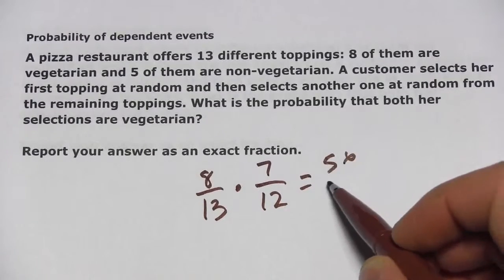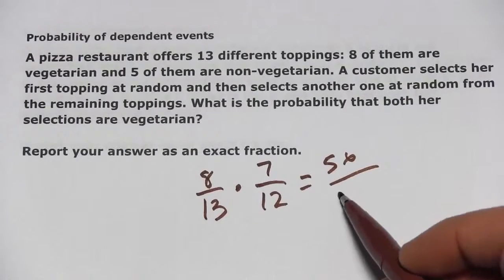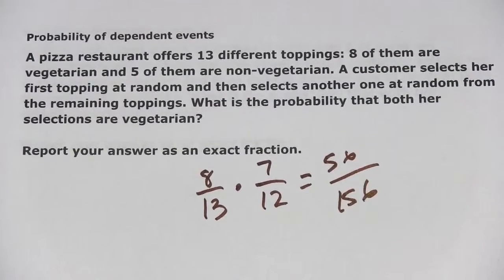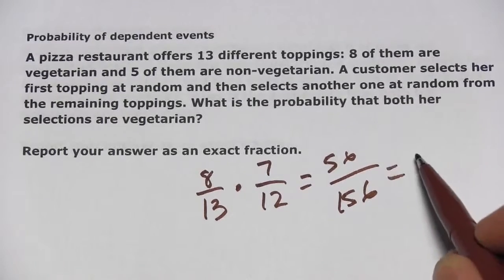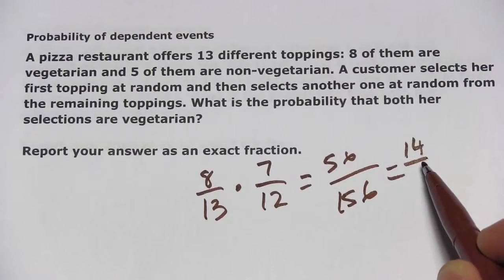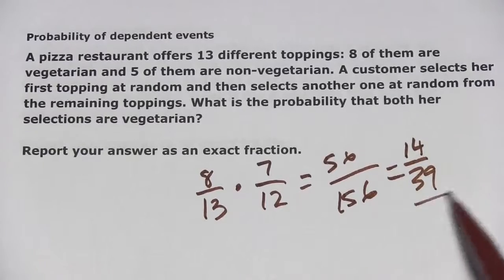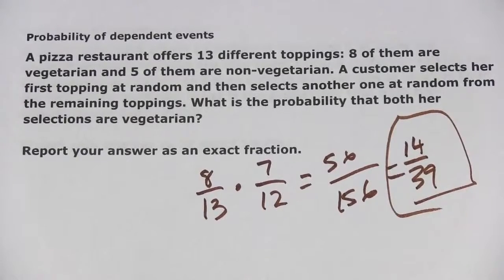This is 56 and this is 156, and then I think we can simplify here. This looks like 14 over 39, and that is our probability of picking two vegetarian toppings.